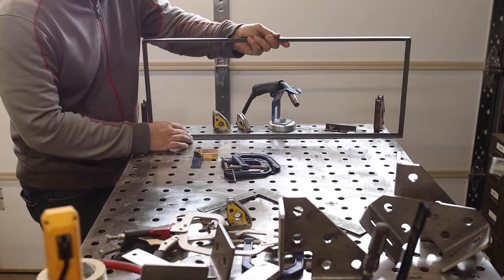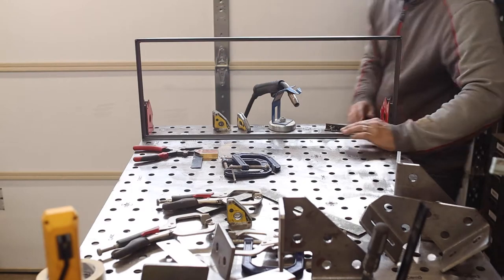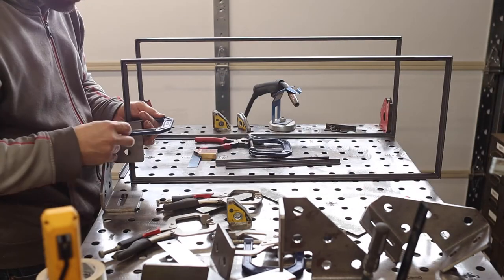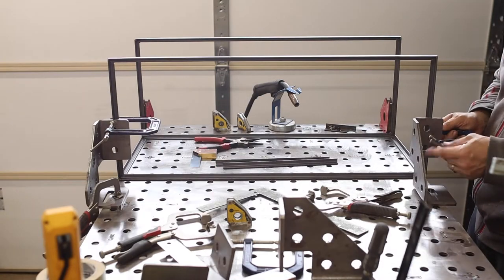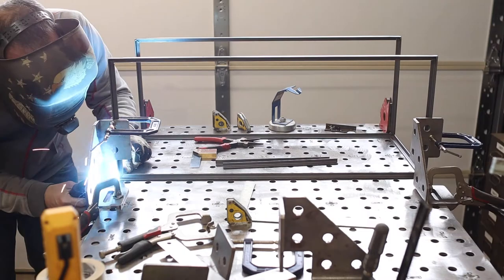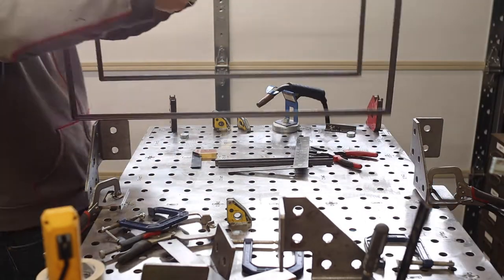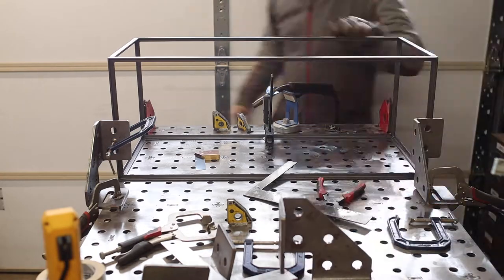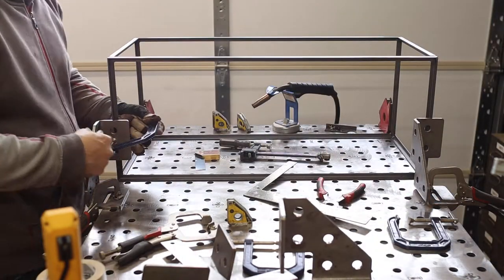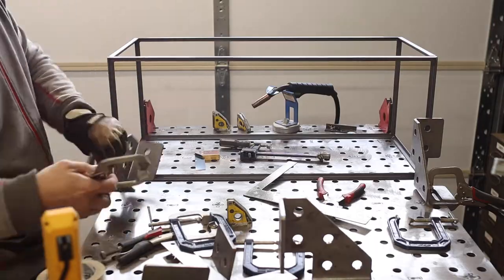To get the two tiers assembled I used a combination of magnets, genuine speed squares, and clamps. Once I got those parts where I wanted, I tacked them together, flipped it over and repeated it on the other side. And then once those were tacked and I was happy with all the joints, I went ahead and finished out the welds.